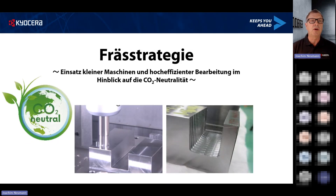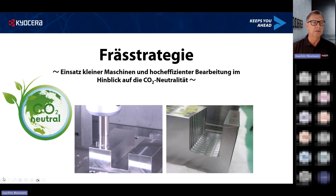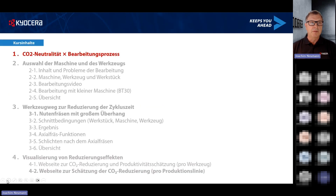Das Thema heute ist der Einsatz kleinerer Maschinen, speziell die hocheffiziente Bearbeitung und die CO2-Neutralität. Im ersten Teil spreche ich über CO2-Neutralität und den Bearbeitungsprozess. Im zweiten Teil sprechen wir über die Auswahl der Maschine und des Werkzeugs. In Teil 3 schauen wir uns die Werkzeugwege an, um die Zykluszeit zu reduzieren, speziell bei Werkzeugen mit großem Überhang. Zum Abschluss geht es in die Visualisierung von Reduzierungseffekten.